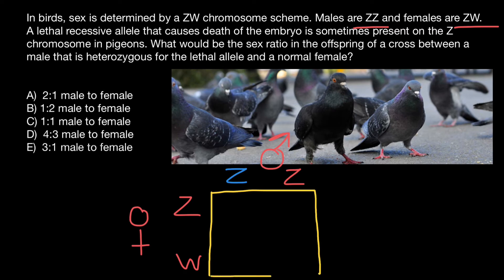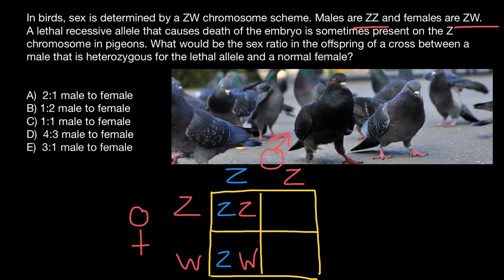Now let's build the Punnett square and see what happens to the progeny of this couple. The defective Z chromosome is inherited from the father's side, and the normal Z chromosome from the mother's side. The defective Z chromosome from the father paired with the normal W chromosome from the mother. The normal Z chromosome from the father paired with the normal Z chromosome from the mother. And the normal Z chromosome from the father paired with the normal W chromosome from the mother.